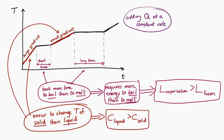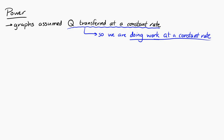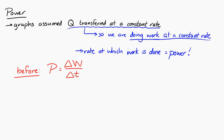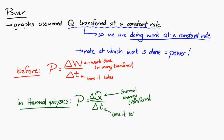Lastly, I want to bring up the idea of power, because in these graphs thermal energy is being transferred at a constant rate. Transferring energy at a constant rate means doing work at a constant rate, and the rate at which work is done is power. We can write power equals Q over t, or delta Q over delta t — power is equal to the rate at which we are transferring thermal energy. This will come up a lot in these kinds of problems.